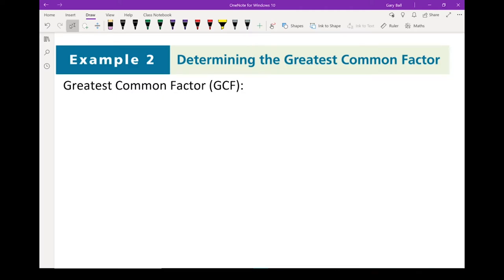The next set of examples we're going to do involve finding the greatest common factor, also known as the GCF. Now let's define that. If you're given a set of numbers, the greatest common factor is the largest factor that will divide into all of the numbers.